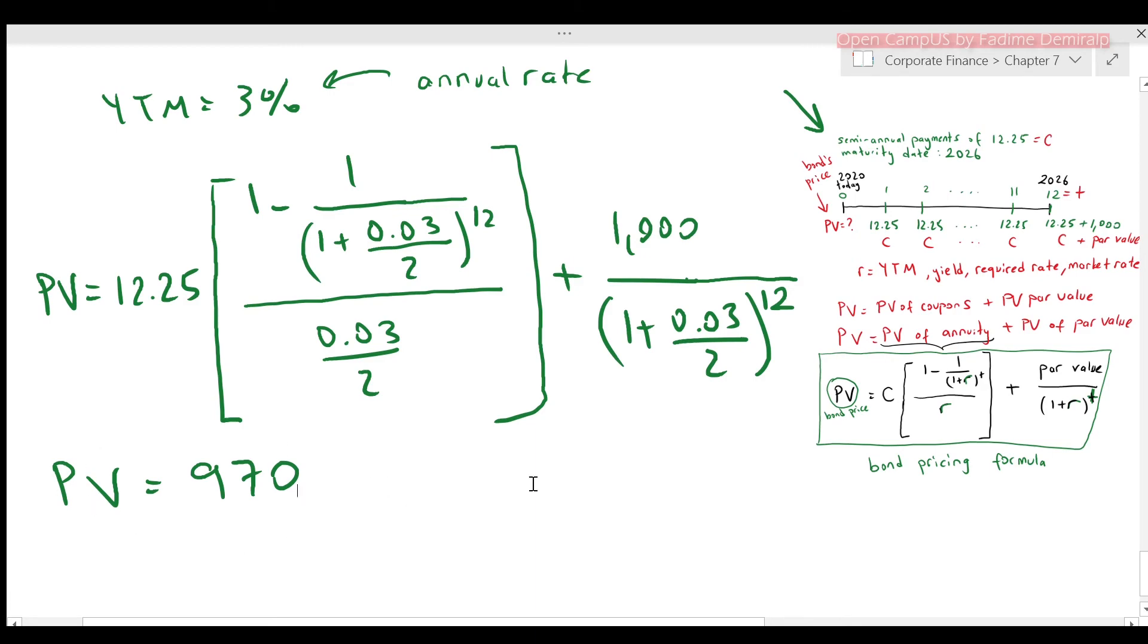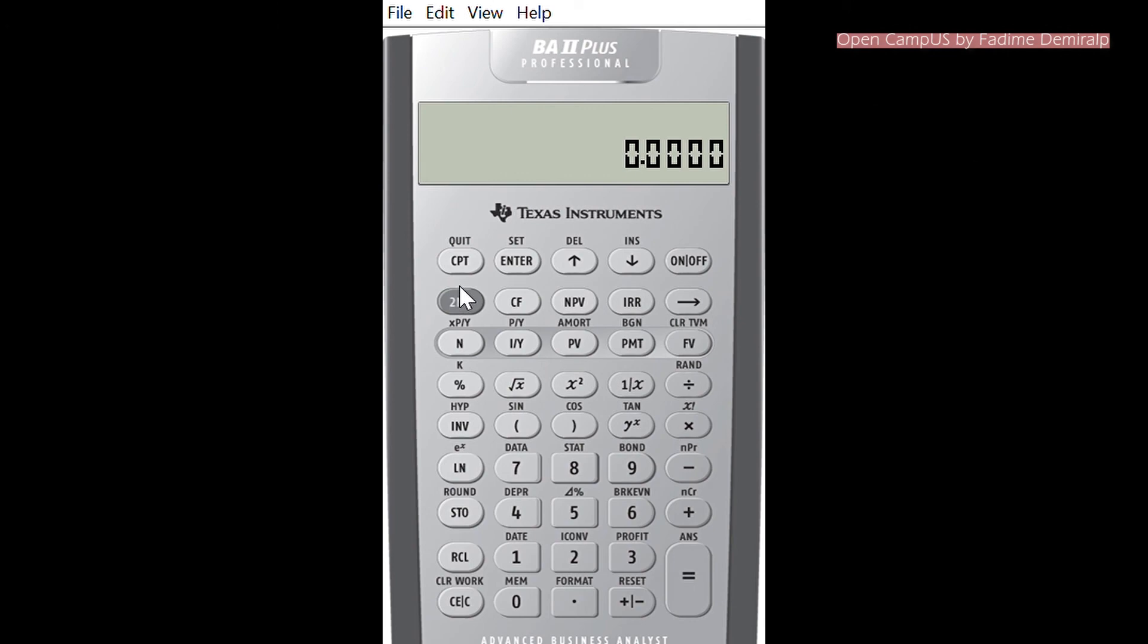Before interpreting this price, let's find the price by using a calculator. Clear time value of money. Second, clear TVM. IY is 3 half. So I'll have 3 divided by 2 equals then IY. Period is we have 6 years times semi-annual payments. So 2 equals 12 which is N. 1,000 is the feature value. 1,000 is the money you're going to get. So it's an inflow. Therefore, I have positive 1,000. Interest payment you'll receive is $12.25. So 12.25 is also an inflow and PMT. Compute present value.